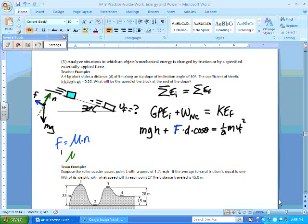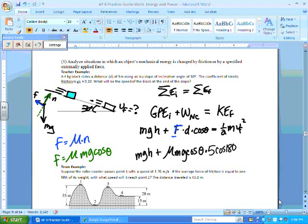of gravity perpendicular to the ramp is M G times the cosine of theta. So it ends up being mu M G cosine of theta for your force of friction. So we have to plug that all in here for F. So let's rewrite this line. We'll say M G H plus mu M G cosine of theta times the displacement times cosine of theta again. That's a different theta, so I should denote it differently.